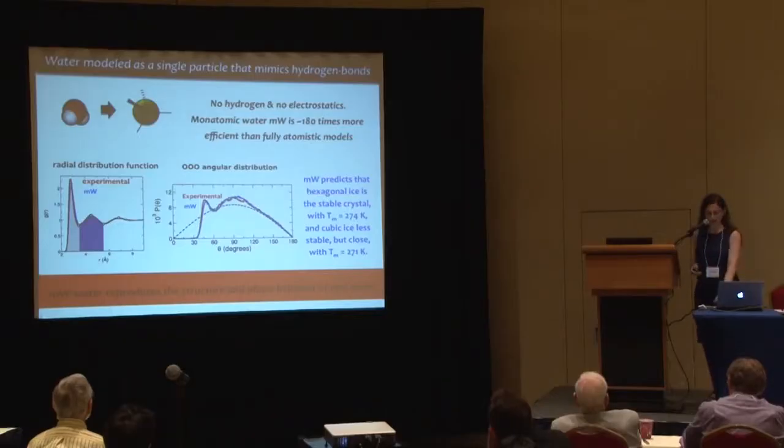This very simple model of water that knows how to make hydrogen bonds but doesn't have hydrogens — a paradox I like — reproduces very well the structure of liquid water, the angular and radial distribution functions, the distribution function and structure of the glass and ice, the melting point of ice, and predicts that hexagonal ice is the most stable crystal, more stable by a little than cubic ice.